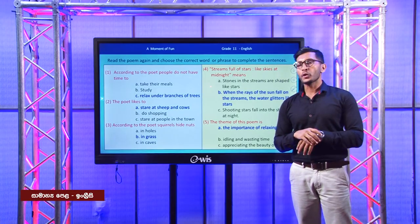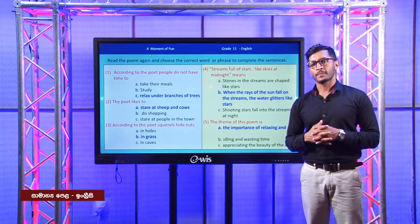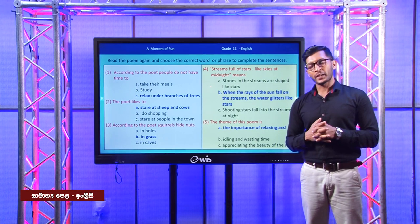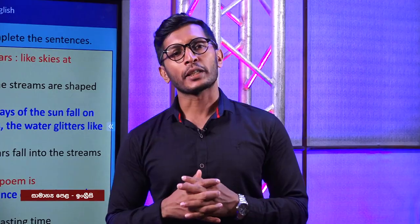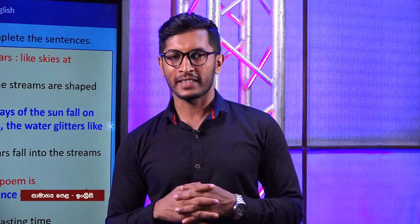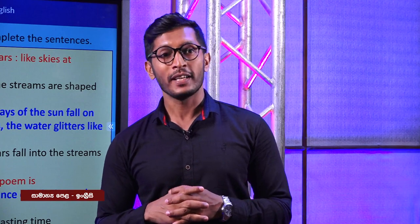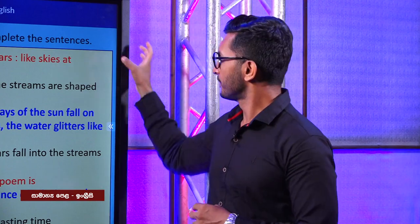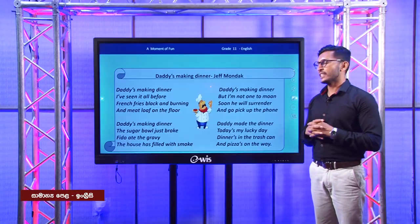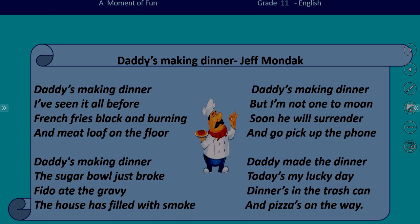Now I'm going to show you another interesting poem. It is very simple in language so that you can easily read and understand the poem. It is 'Daddy's Making Dinner' by Jeff Mondack. Daddy's Making Dinner, I've seen it all before. French fries black and burning, and meat love on the floor.